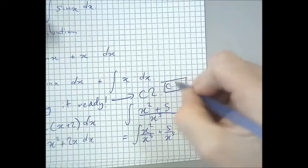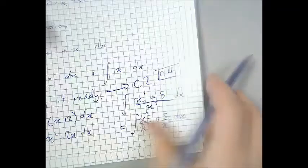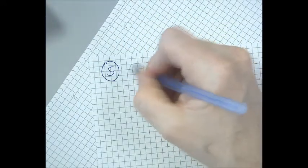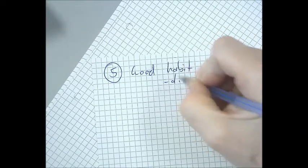Core 4, most of the chapter is spent giving you techniques so that you do not need to get stuff ready. Number 5, good habit, differentiate to check.